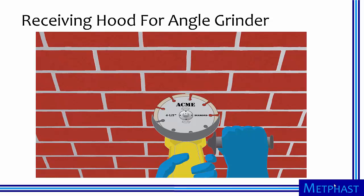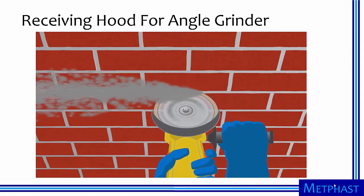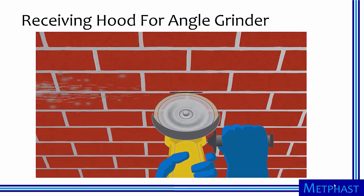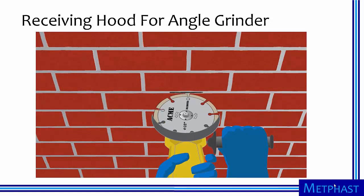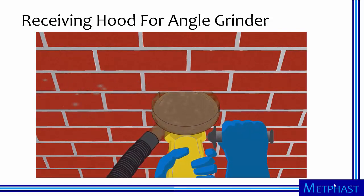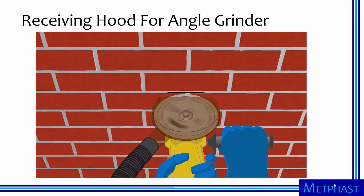The hood used to capture dust from an angle grinder is a good example of a receiving hood. In this case, a worker is using an angle grinder to remove mortar between bricks as part of a process known as tuck pointing. Without capture, the grinder throws debris and large quantities of dust into the air, often resulting in very high exposures to dust and, more importantly, crystalline silica from the sand in the mortar. A hood consisting of a shroud with a heavy-duty vacuum can be used to dramatically reduce dust exposures. The shroud is specially designed with the vacuum positioned to receive the dust as it is thrust into the air by the inertial energy of the grinding wheel.